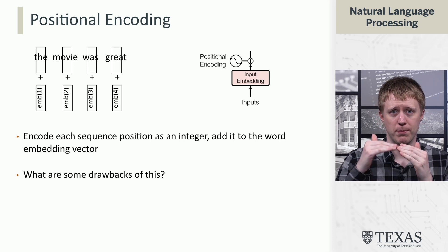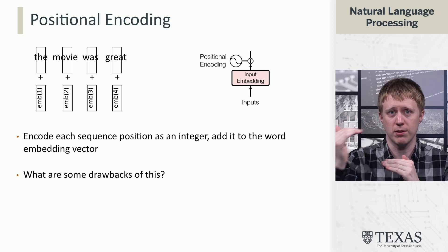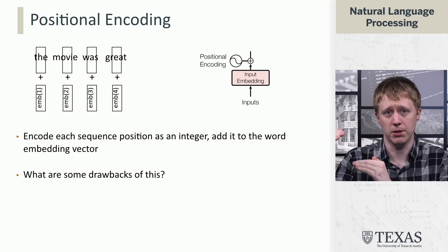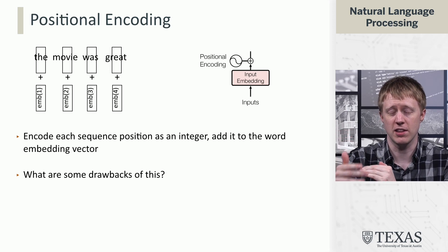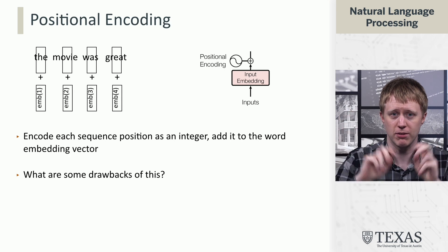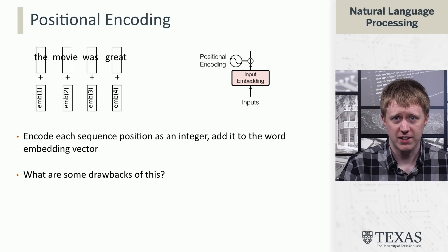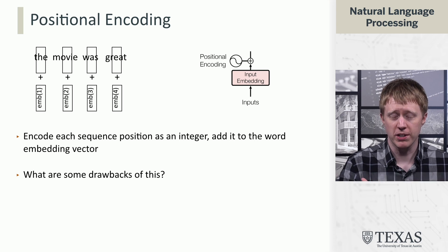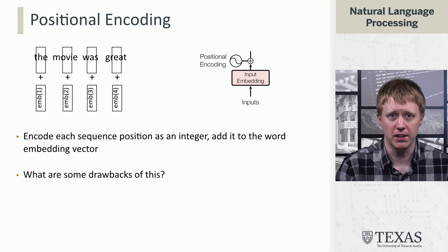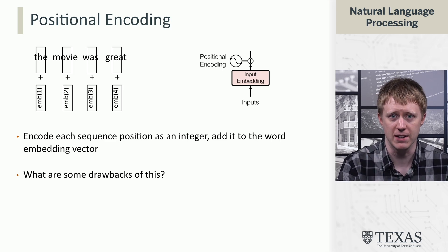So if we think about the word embeddings as a big table associating the word the with some vector, movie with some vector, we're going to have another table of independent embeddings that associate the word one with some vector, the word two with some vector. These are kind of fake words, right? And then we just add these vectors together. This is what's stipulated in the attention is all you need paper. You just mix this information into the vectors at the input layer.